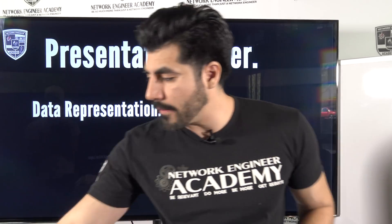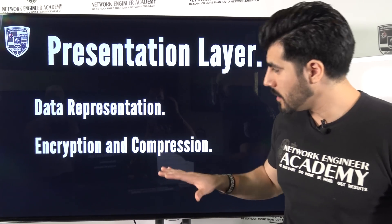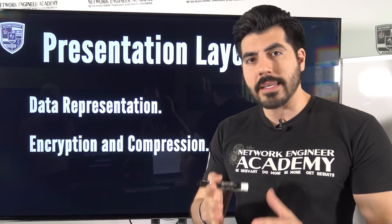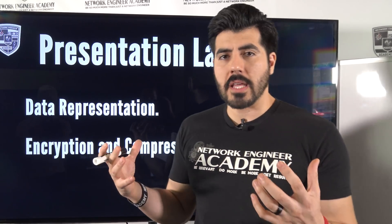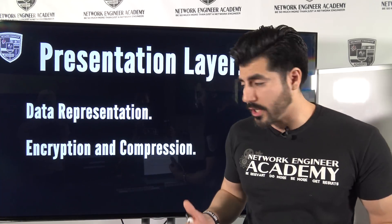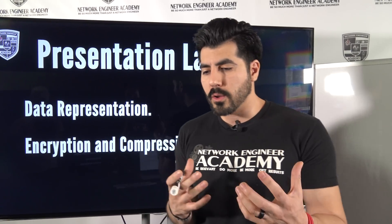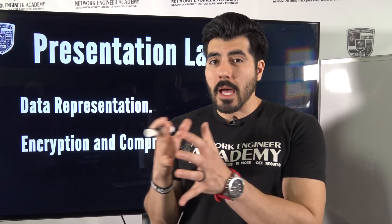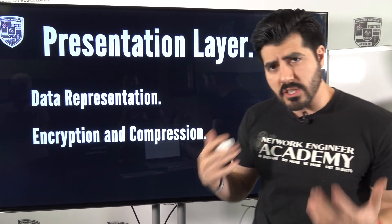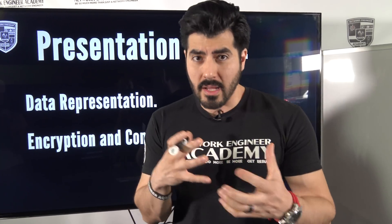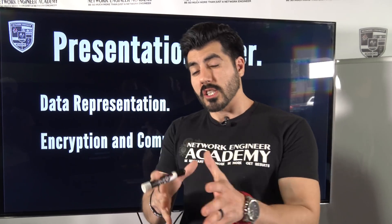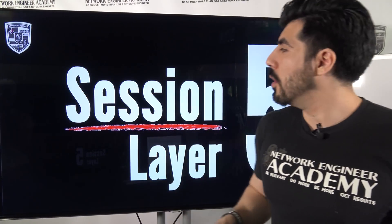The presentation layer is layer six. It handles data representation, encryption, and compression. Encryption is when you secure a file or document. Compression is when you take a folder — say 20 megabytes — and compress it down to 15 or 10. Data representation converts information into ones and zeros for communication.